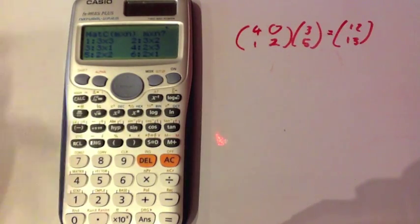So that's how you can use your Casio calculator to check whenever you're multiplying matrices together that you've done it correctly. Bye-bye.